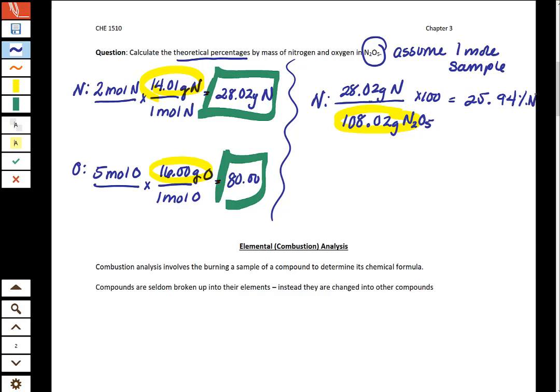Then I'm also going to do the long way here because I prefer that way. I'm going to take my 80 grams of oxygen, divide it by the mass of my sample.